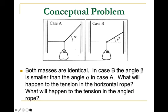In this case, both of these are identical. Both masses are identical. In case B, the angle beta is smaller than the angle alpha. What's going to happen to the tension in the horizontal rope? What will happen to the tension in the angled rope? So what's going to happen here is this. You've got this tension acting here. Let me draw that better. You've got this tension acting here, and of course the weight of this thing here. I'll try to draw better this time over here.